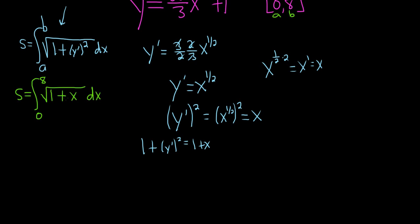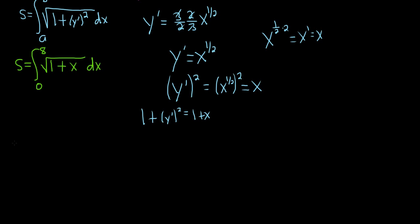So technically, we're supposed to make a u substitution here. So let's go ahead and be pro about it and do it. So we let u equal 1 plus x. That means that du is equal to dx. Pretty simple. However, this is a definite integral. So if we want to be super correct, we should change the limits of integration.